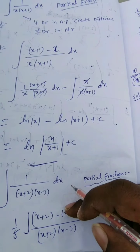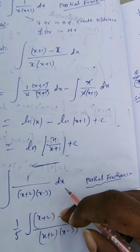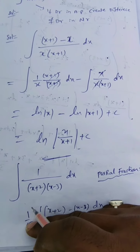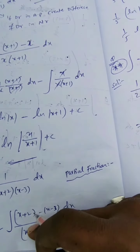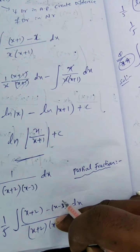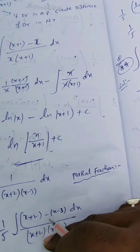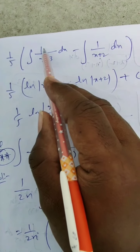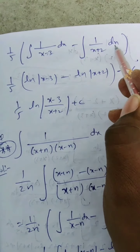If I subtract the denominator factors on top: x plus 2 minus x minus 3 gives 5. So I divide by 5 to balance. Now I separate: 1 by 5 times integration of 1 by x minus 3 dx minus integration of 1 by x plus 2 dx.